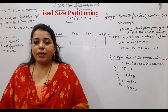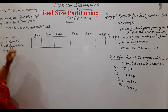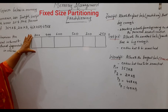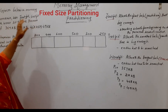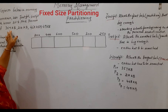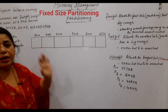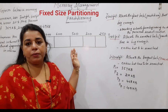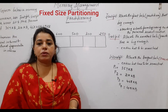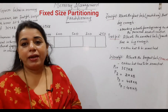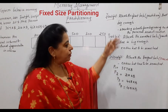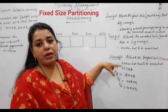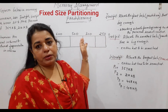In fixed size partitioning, a numerical can be asked for seven to eight marks. The question will be like this: given below a memory scenario, use first fit, best fit, and worst fit to place processes of 357, 210, 468, and 491 KB. So four processes you need to place in the given memory scenario using each of the three algorithms.